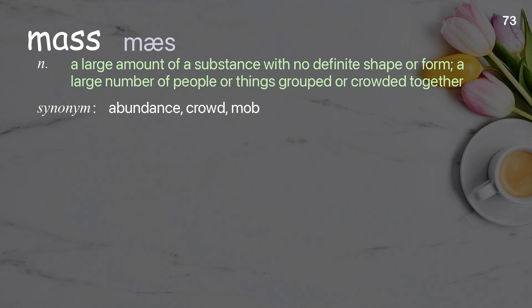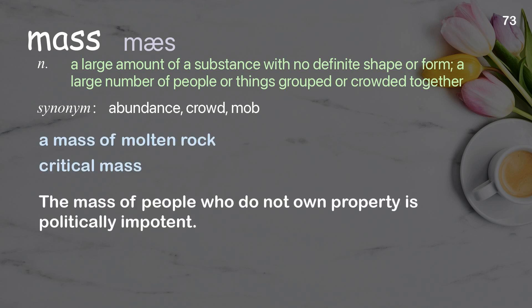Mass: a large amount of a substance with no definite shape or form; a large number of people or things grouped or crowded together. Examples: a mass of molten rock, critical mass. The mass of people who do not own property is politically impotent.